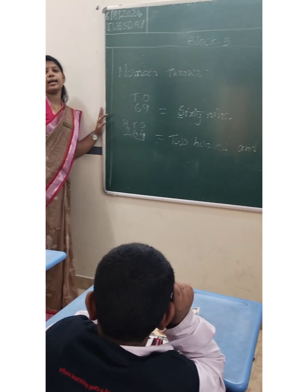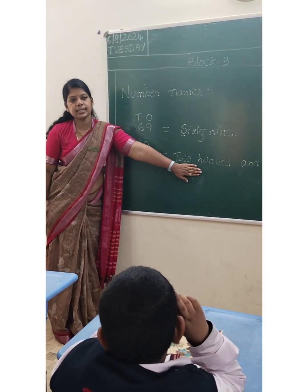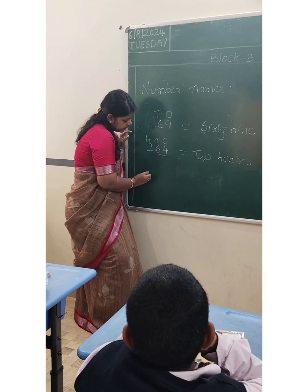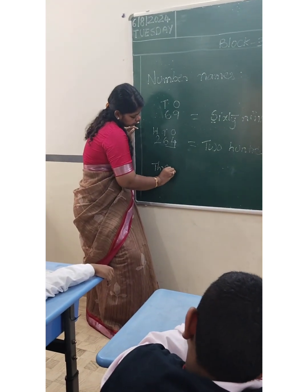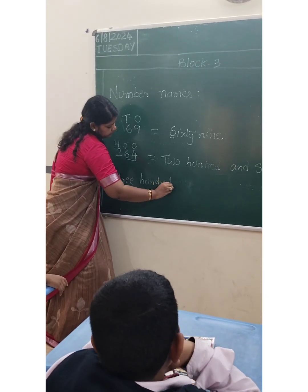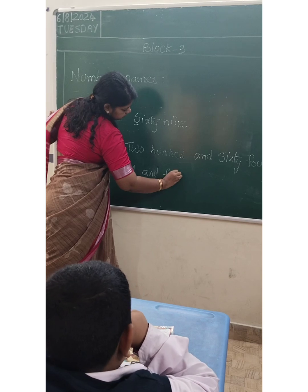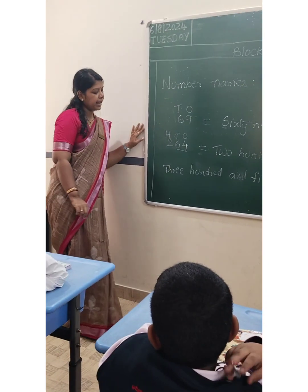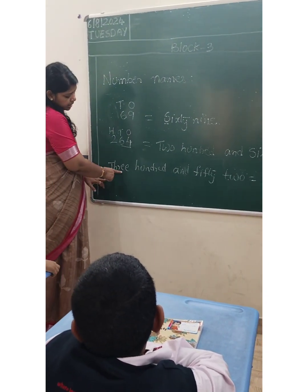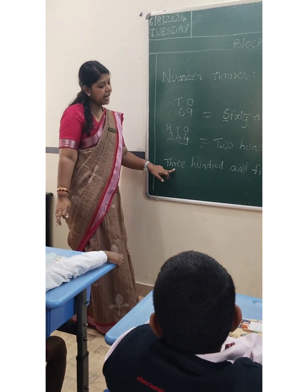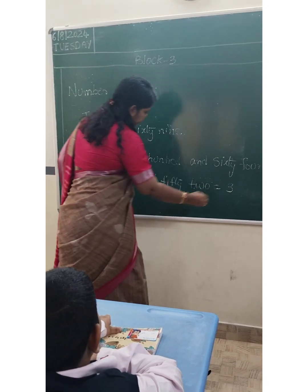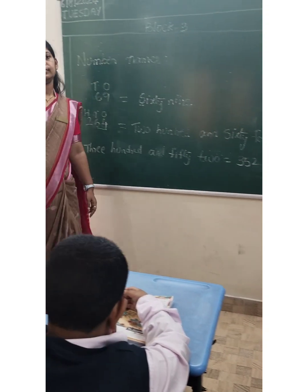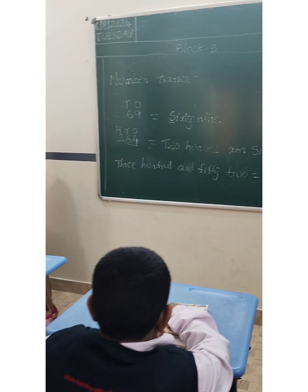Like this you have to write the number name. If they give the words and ask you to write the number, then you write the figure. For example the number is two hundred and sixty-four — you write 264. Is it clear children? Yes.